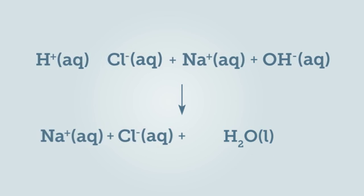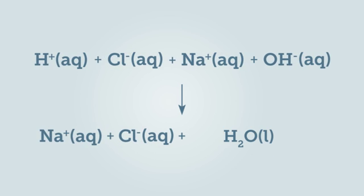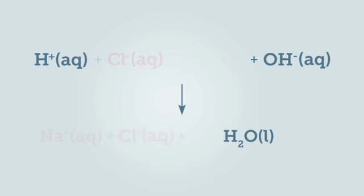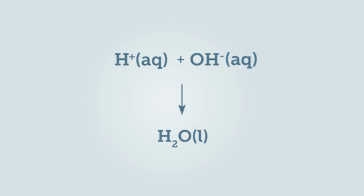If we draw the dissolved compounds as ions, we can simplify the equation leaving out the sodium ions and the chloride ions. They are known as spectator ions because they appear on both sides of the equation. When we have removed all the spectator ions, we are left with the net ionic equation, showing just the hydrogen ion and the hydroxide ion reacting to form a molecule of water.